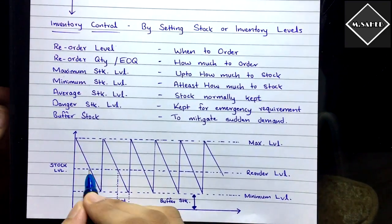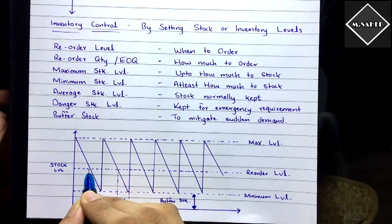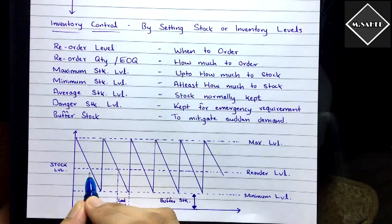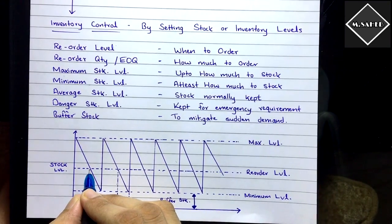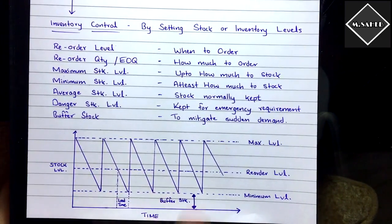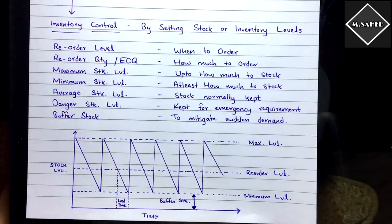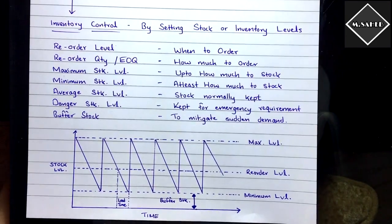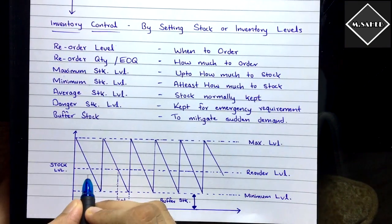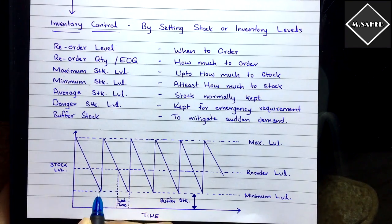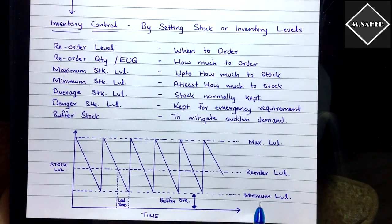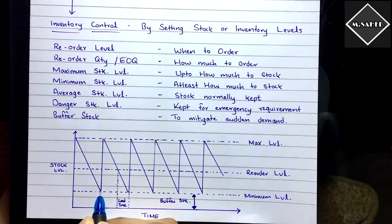When stock reaches the reorder level, you place a fresh new order with your supplier. But you won't receive the order immediately — your supplier will take some time, let's say one week. That time is called lead time, reorder period, or shipping period. Your inventory keeps reducing until it reaches the minimum level, at which point you receive the order.